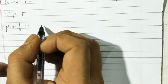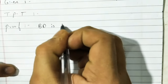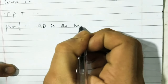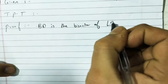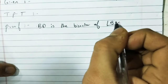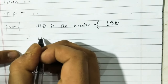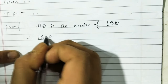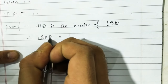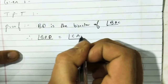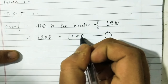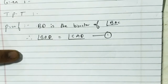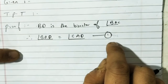So in the proof, first point: AD is the bisector of angle BAC. Therefore angle BAD equals angle CAD. This is equation 1, which will be used later. Now let me draw the remaining figure for the next part.